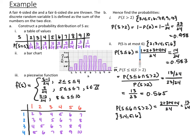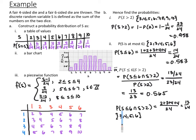For the conditional probability P(S ≤ 6 | S > 2), we use the formula: P(S ≤ 6 and S > 2) divided by P(S > 2). That means S = 3, 4, 5, or 6, giving 13/24, divided by P(S > 2) = 23/24. So the result is 13/23, or approximately 0.565.